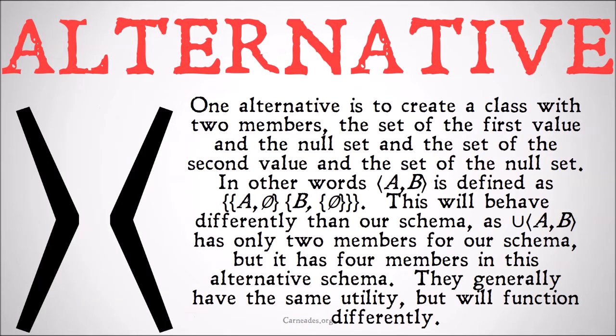One alternative is to create a class with two members: the set of the first value and the null set, and the set of the second value and the set of the null set. In other words, a, b is defined as the class of the class of a and the null set, and the class of b and the set of the null set. This will behave differently than our schema in some ways, as the union of a, b has only two members for our schema but has four members in this alternative schema. They generally have the same utility but will function somewhat differently.